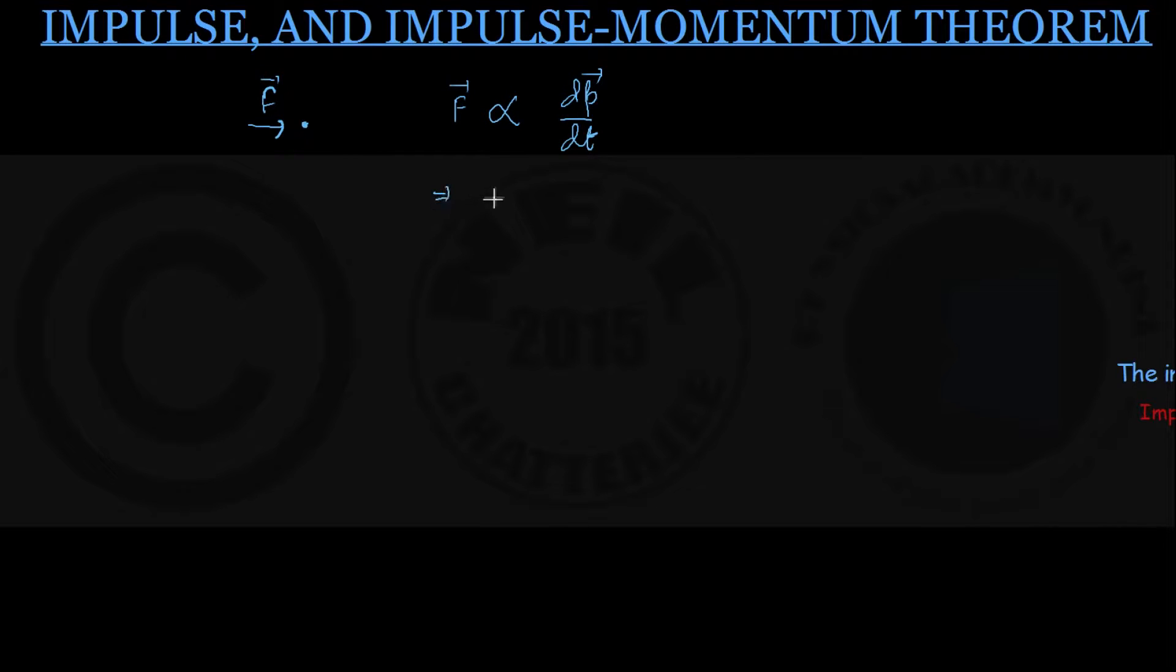We can write from here that F is coming out to be a constant of proportionality K into dP dt, and then defining unit force in a suitable way, we can set this K equal to 1, and my equation boils down to F equals dP dt.